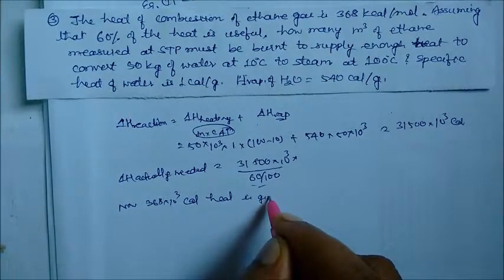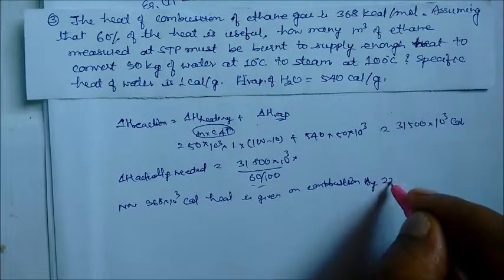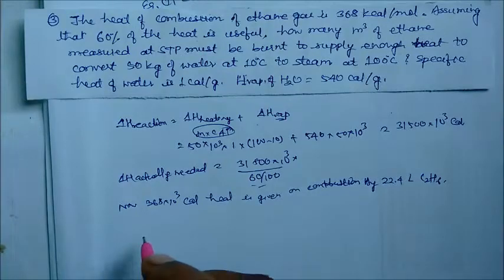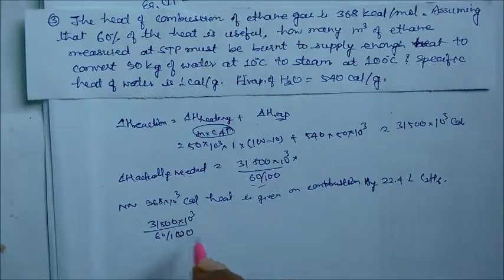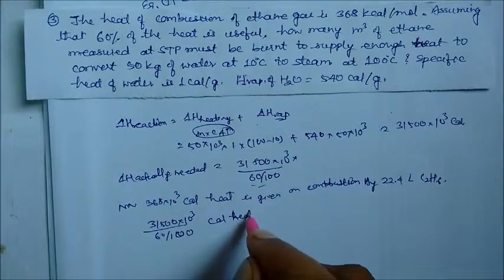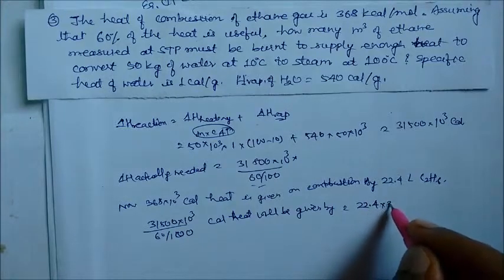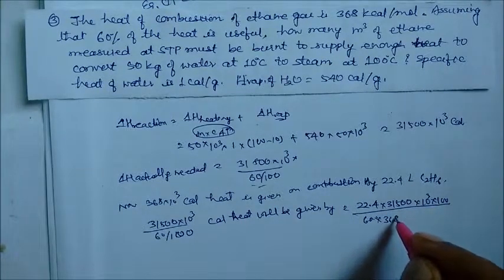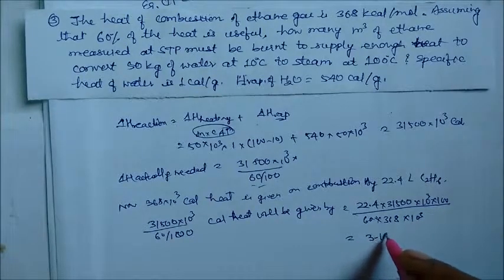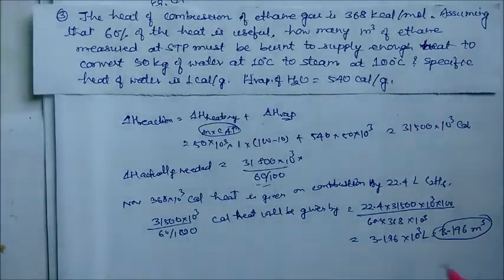Combustion of 22.4 liters of ethane at STP gives 368 into 10³ calorie. For the required heat, volume equals 22.4 multiplied by 31500 into 10³ multiplied by 100, divided by 60 into 368 into 10³. On solving, we get 3.196 into 10³ liters, or 3.196 cubic meters, since 1 cubic meter equals 1000 liters. This is our answer.